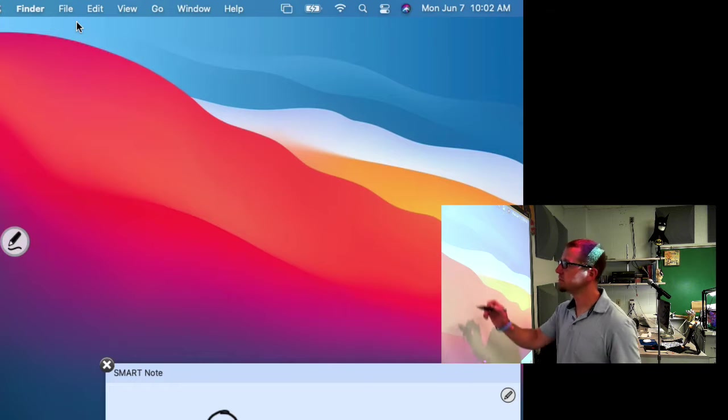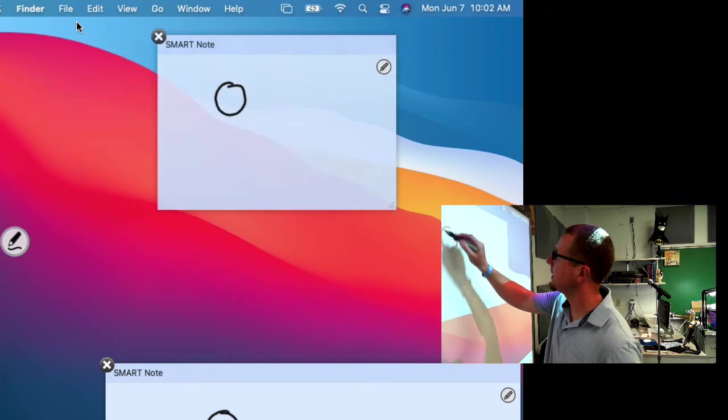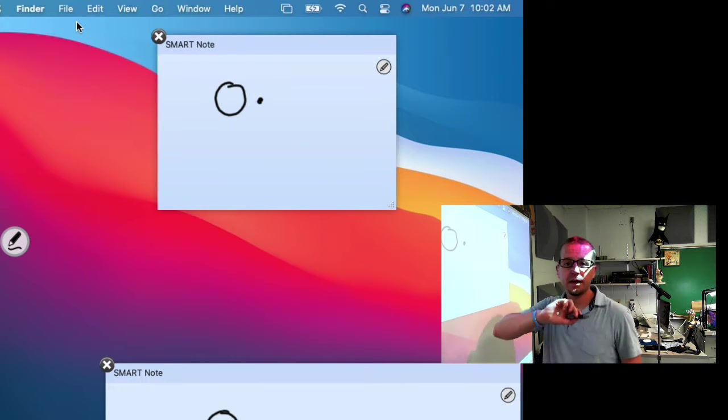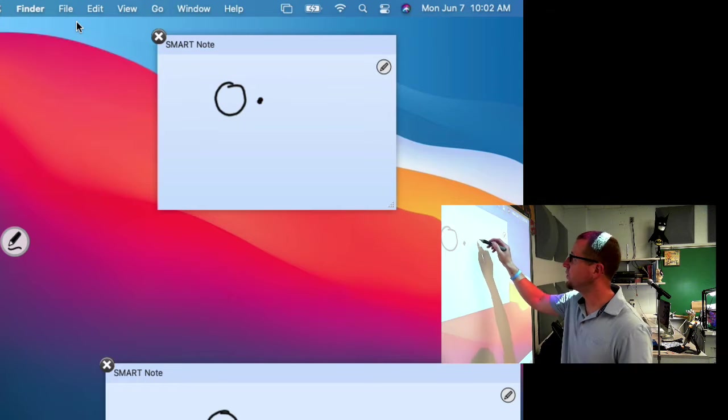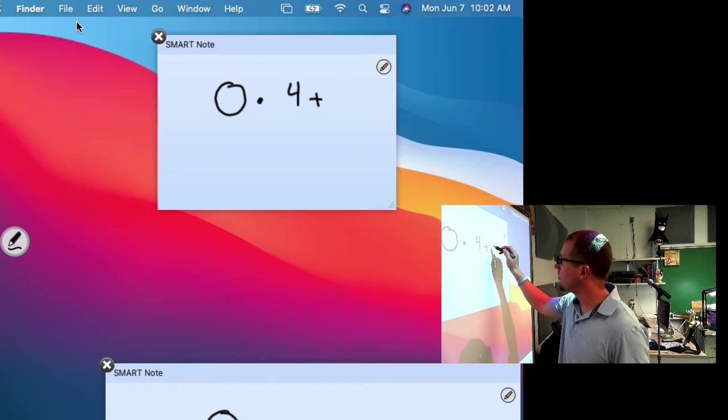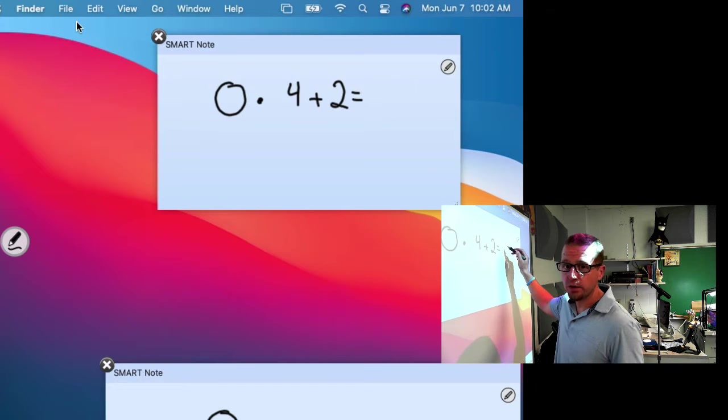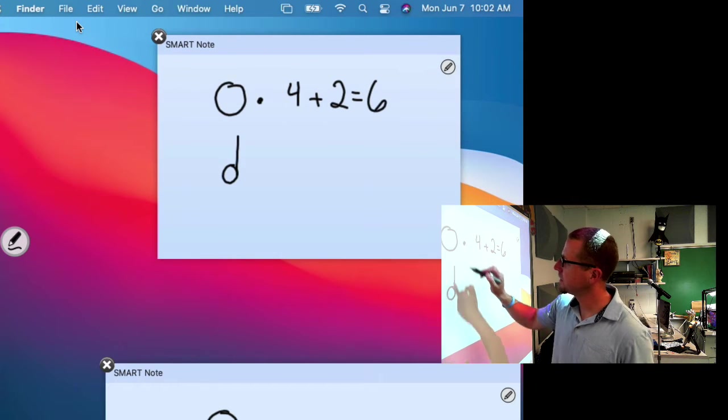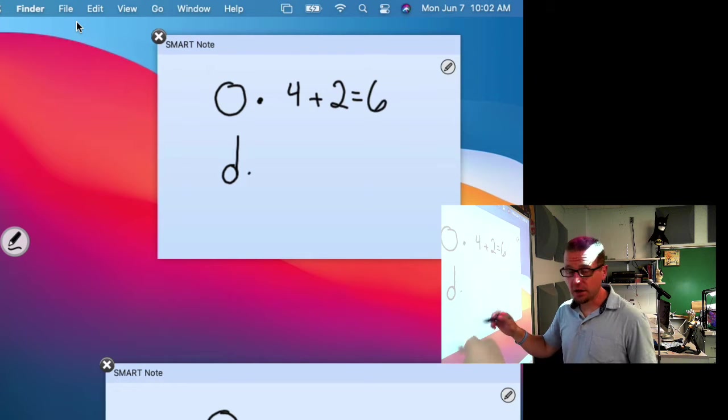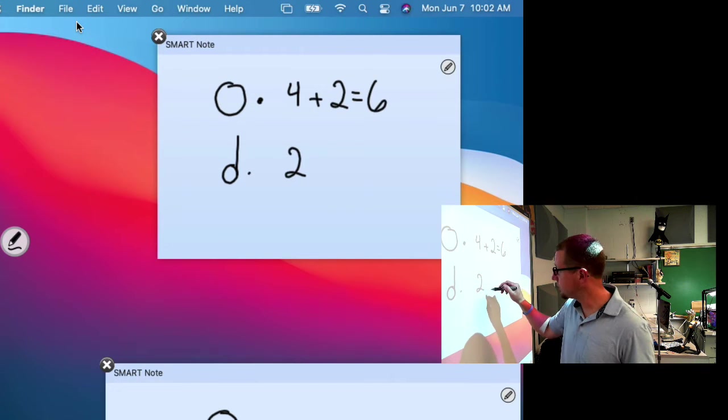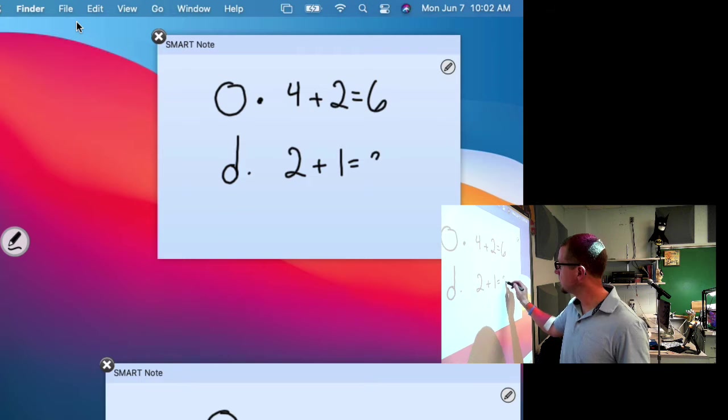Dots. Dots add half to it. So four now becomes six because half of four is two. So a dotted whole note would be six beats. Half note is already worth two. Half of two is one, so two plus one equals three.